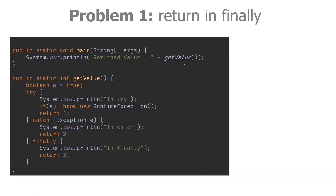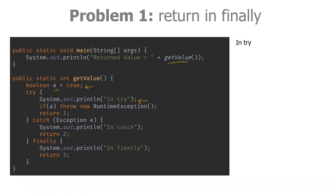There is a System.out.println of the return value in the main method, and before printing it is calling getValue. First, the control will come where we are setting the boolean variable a to true. Then the control will be on the next line where we are printing 'in try'. Since a is true, in the next line we are going to throw a RuntimeException. Because of this, the next line will never get executed and control will come to the catch block where the exception is caught. We will print 'in catch' on the console.